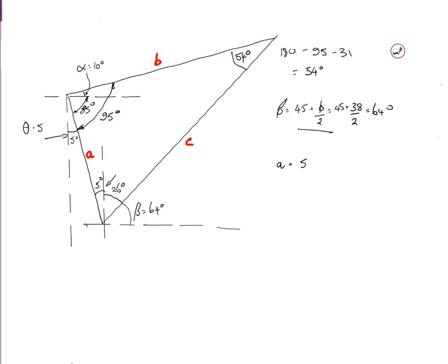A equals 5 over cos 5, which equals 5.019 meters. We get B from 5.019 over sin 54 equals B over sin 31. Using similar triangles goes down to B equals 3.195 meters.